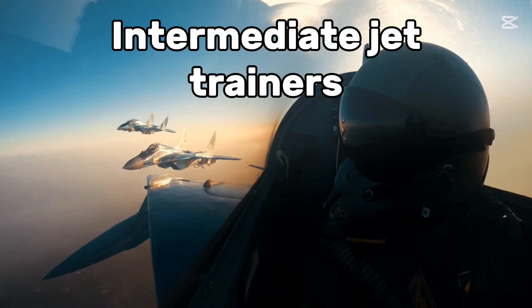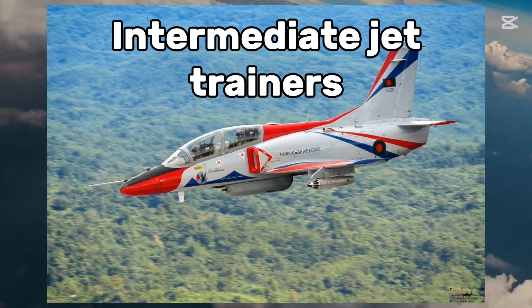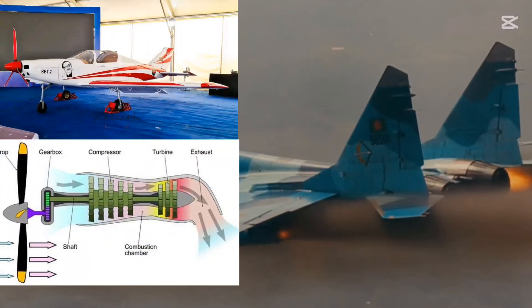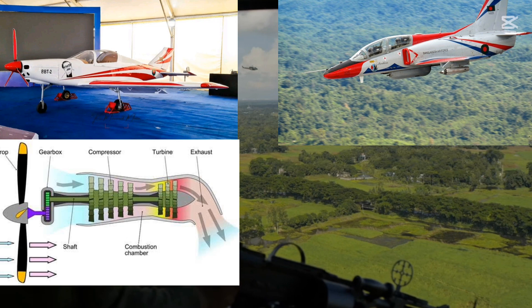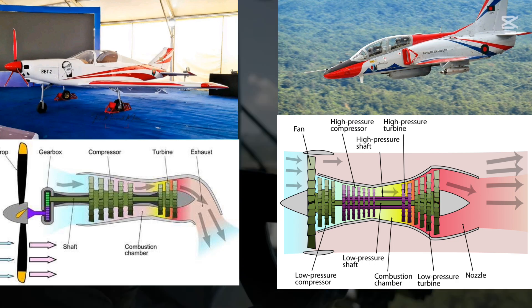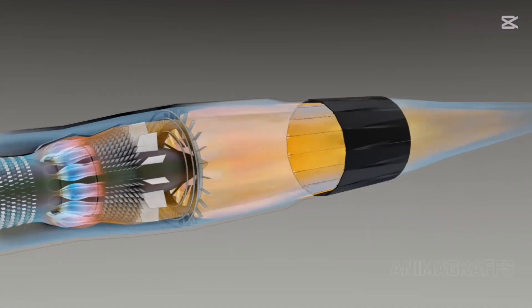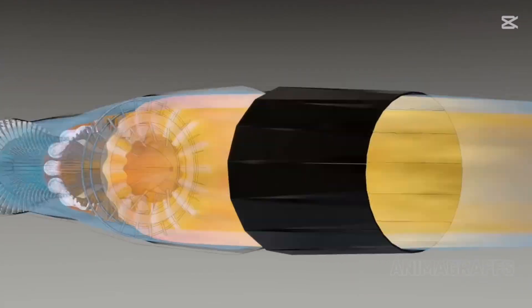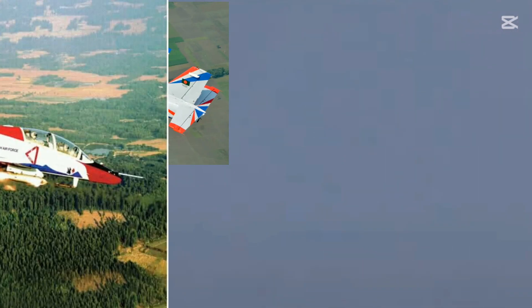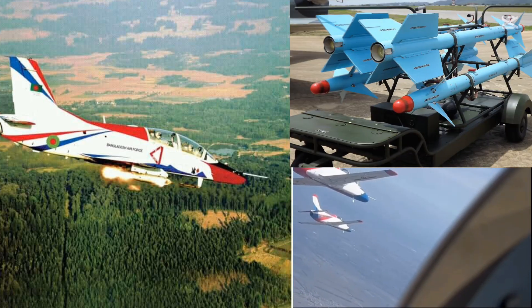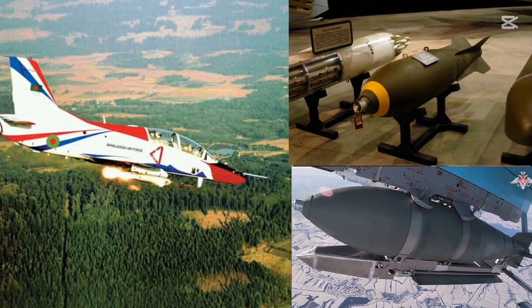For intermediate jet trainers, we're going to be using Bangladesh Air Force's KAWs as our example. The biggest difference between a turboprop basic trainer and an intermediate jet trainer is that intermediate trainers have jet engines, which are a lot more powerful and complicated than turboprop engines. Because of this increase in power, turbofan jet engines generate a lot more thrust and speed, allowing pilots to conduct advanced maneuvering training. Intermediate jet trainers like the KAWs are also capable of light attack, allowing pilots to conduct basic weapons training with short-range air-to-air missiles, small guided and unguided bombs, and rocket pods.